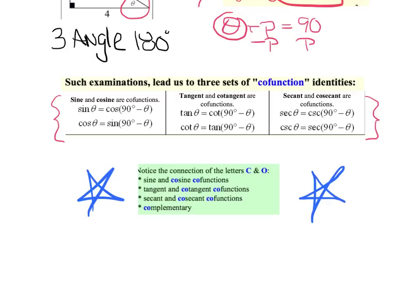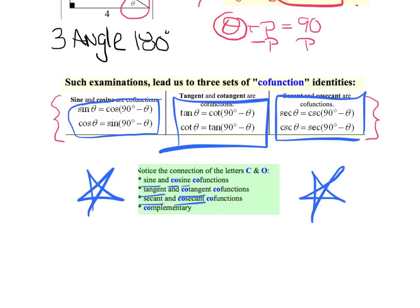Stay with me. If you get this part, you get the whole thing. Sine and cosine are co-functions. Do you notice how sine and then I say cosine are co-functions? They're grouped together. Tangent, now put a co with it. Cotangent are co-functions. They're grouped together. And secant, put the word co in front of it. Cosecant are co-functions. They're grouped together.